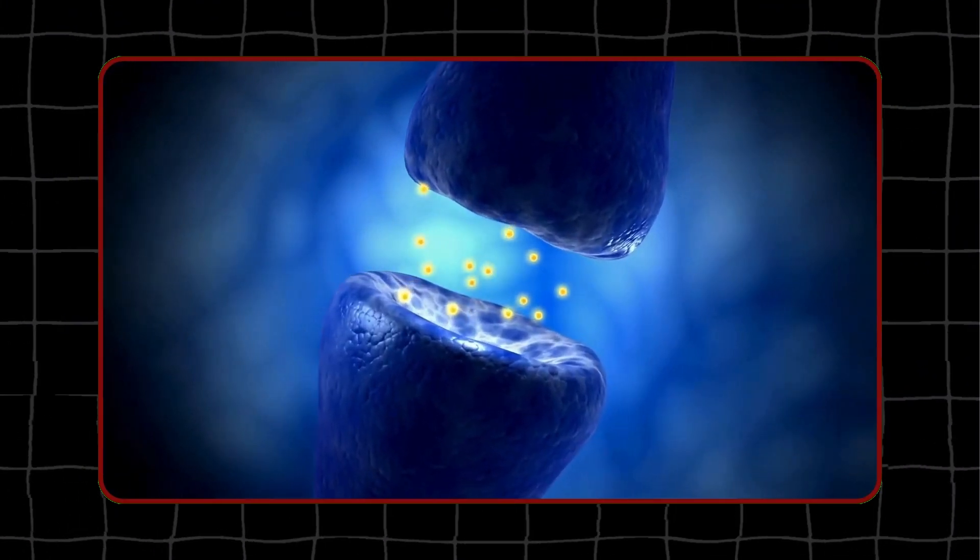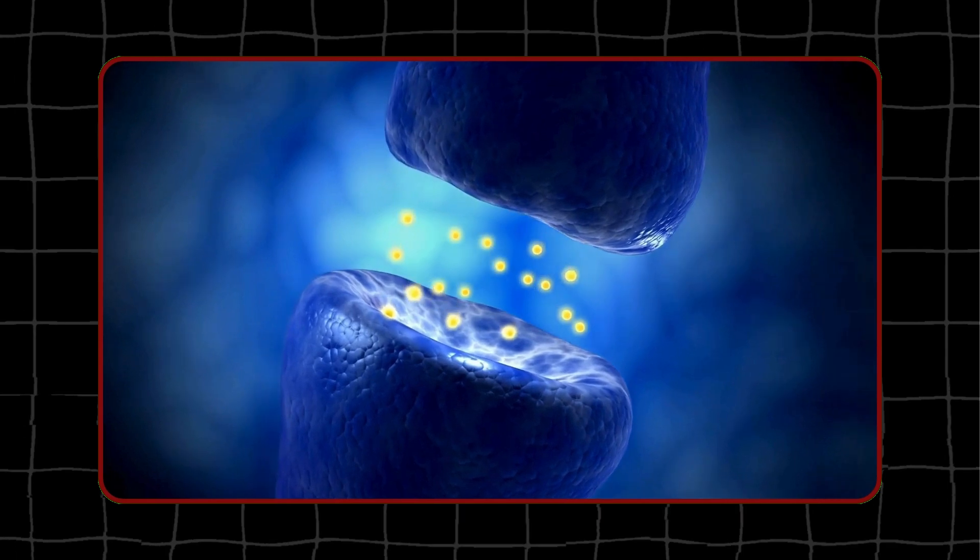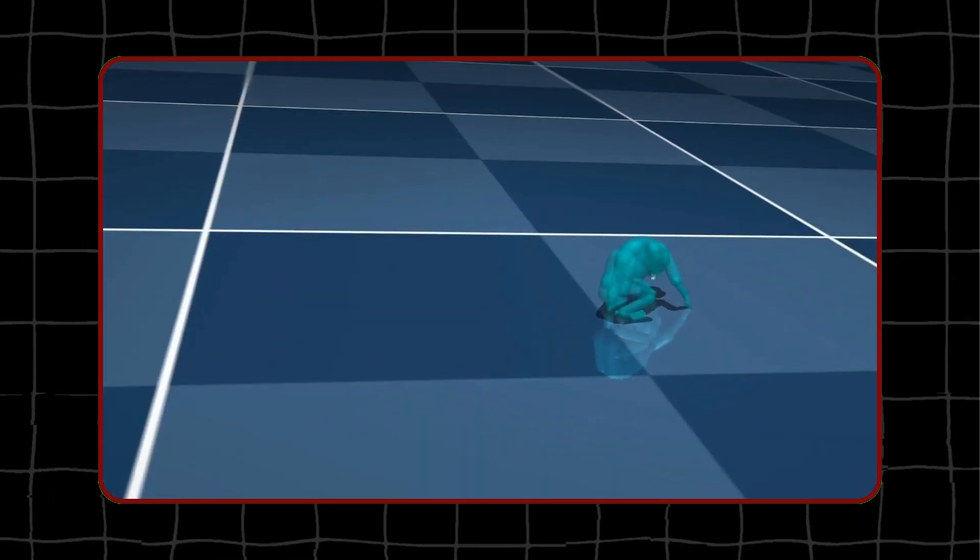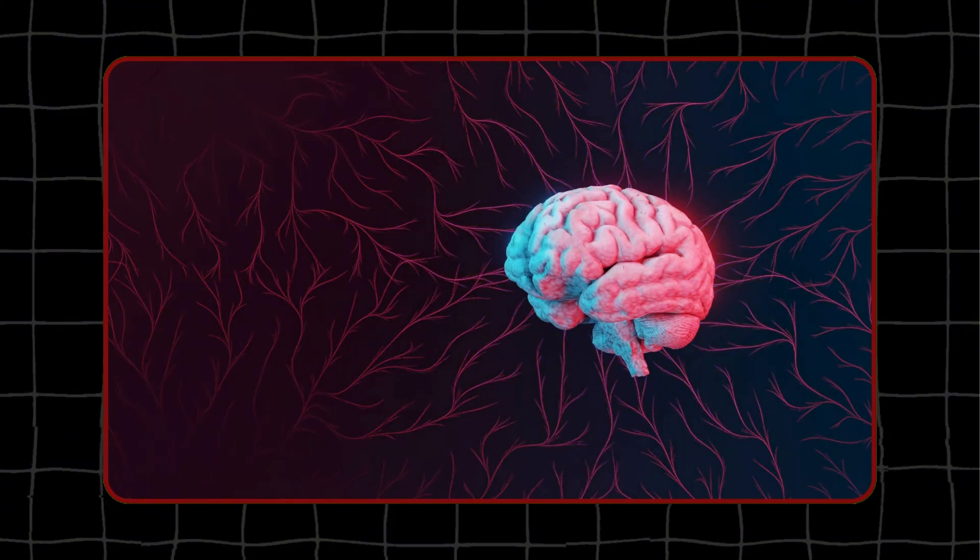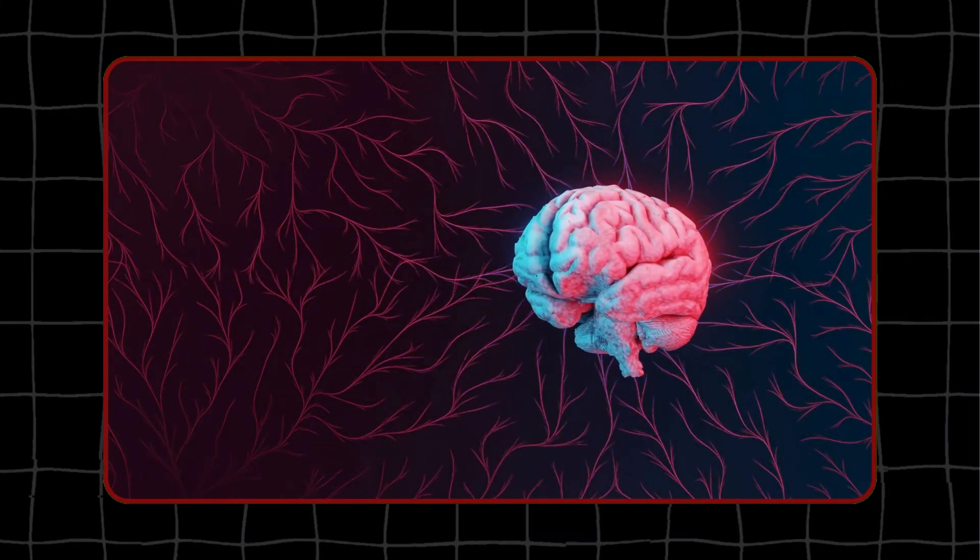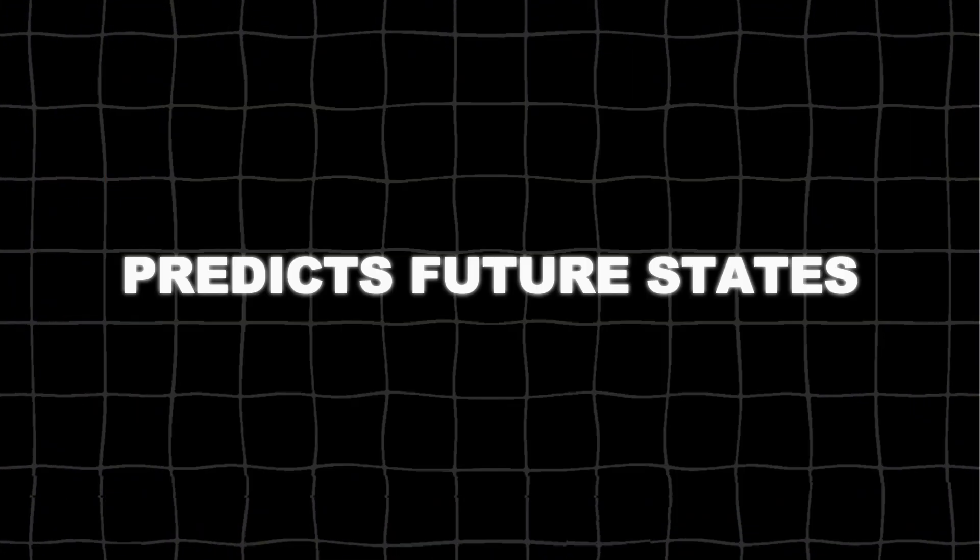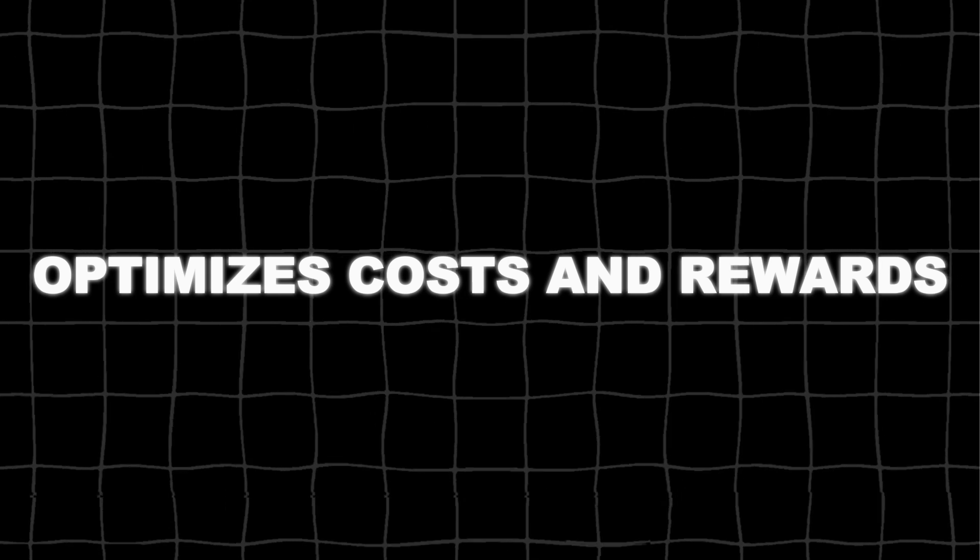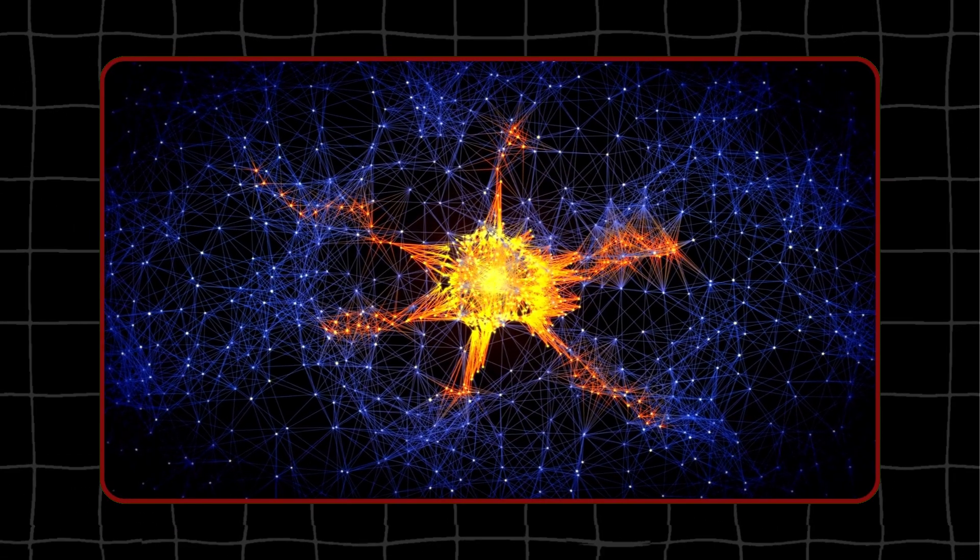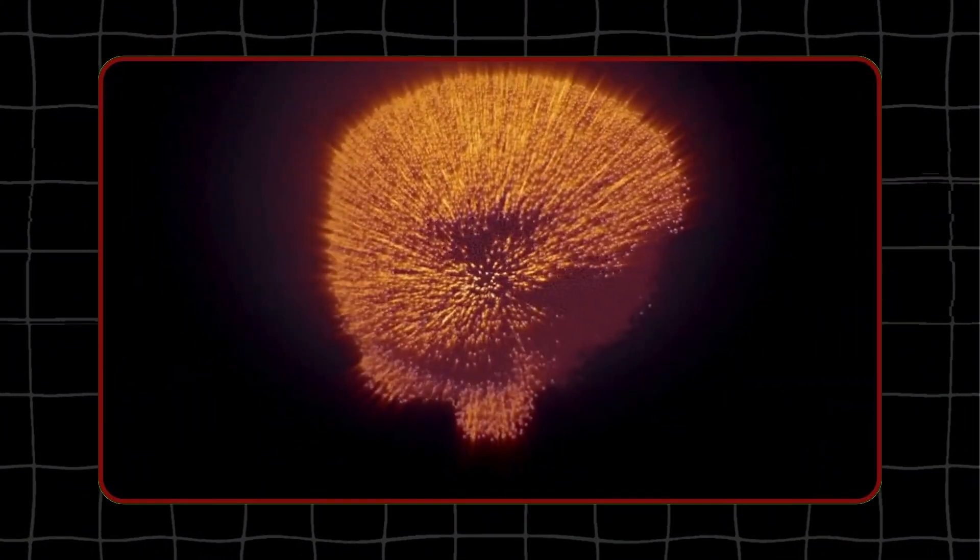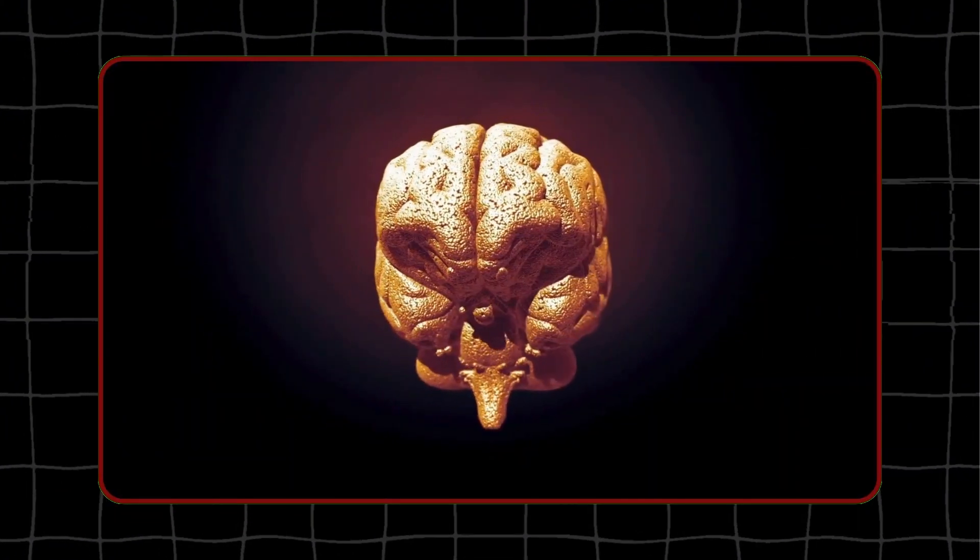This approach enables testing and refining theories about how neural circuits implement specific computational processes. For example, researchers can investigate how the brain estimates the state of the body and environment, predicts future states, optimizes costs and rewards, and coordinates patterns of movement. These are fundamental questions in neuroscience, and the virtual rat brain offers a powerful tool for addressing them.